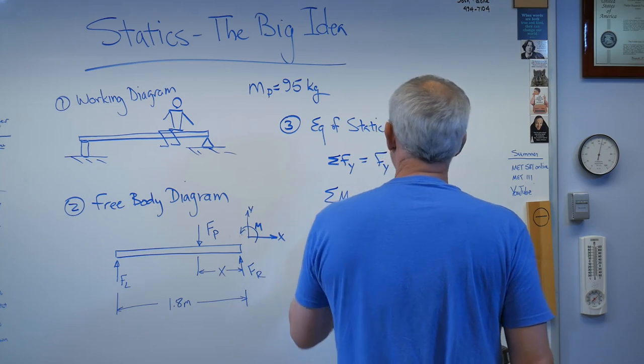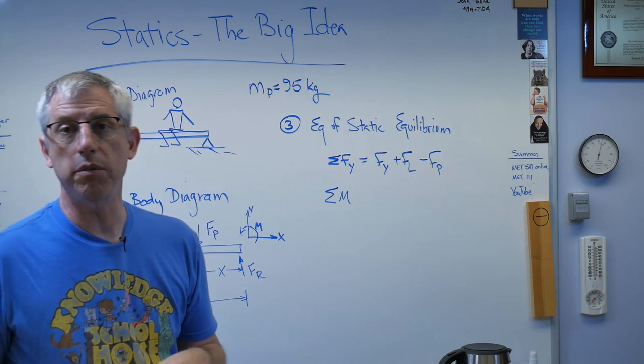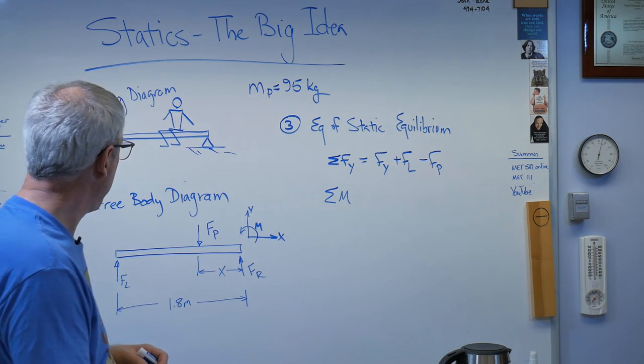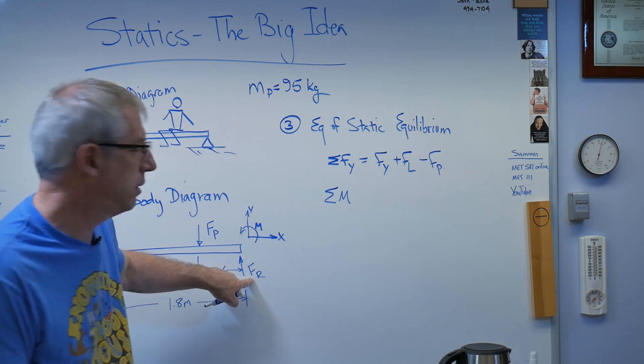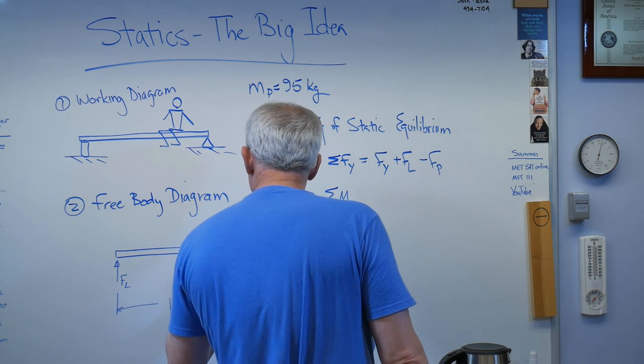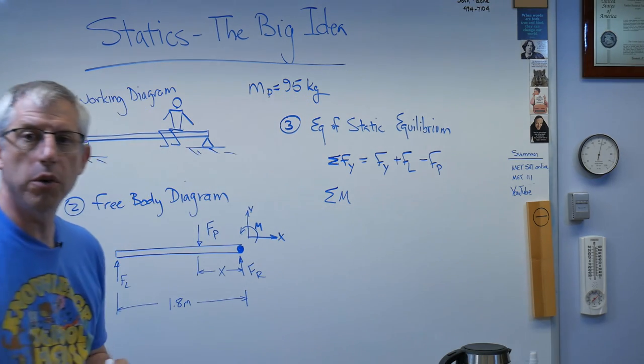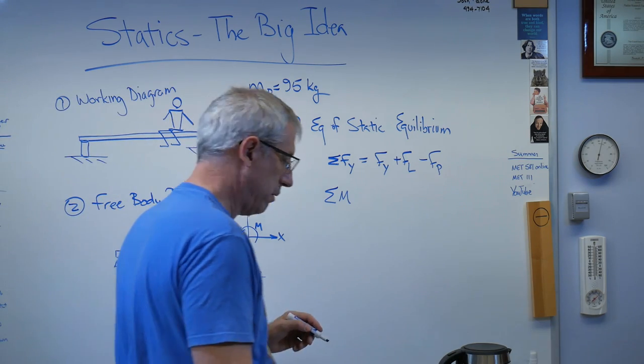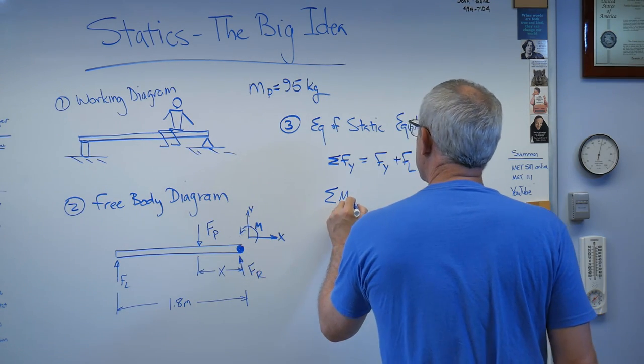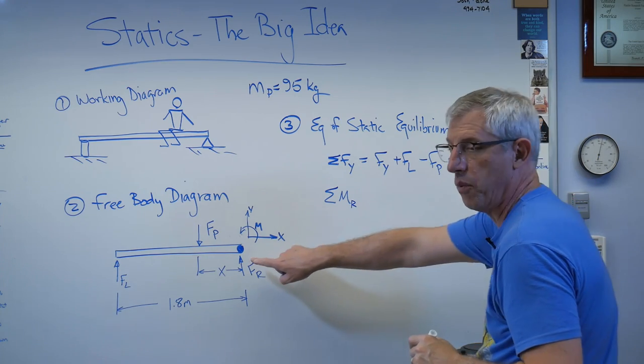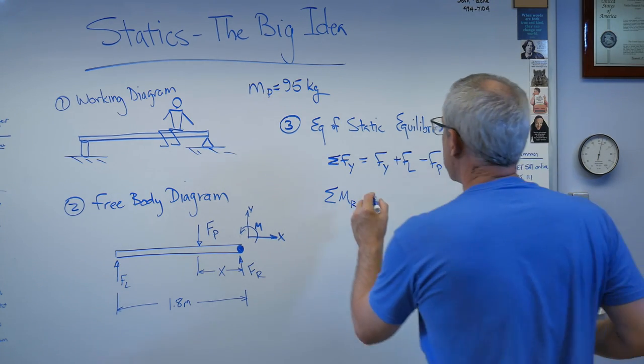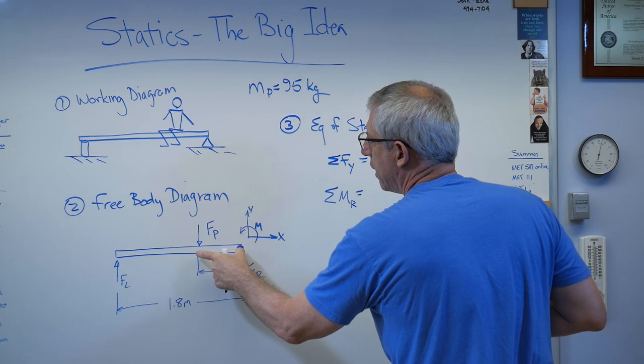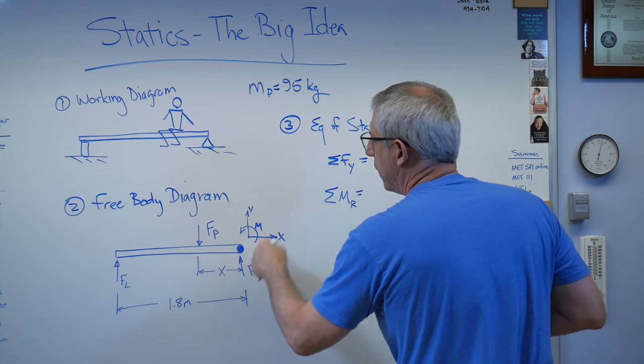Let's do the sum of the moments now. Moment has to be figured about some point. Let's figure our moments about that point on the right. Sum of the moments about R, the right hand point.